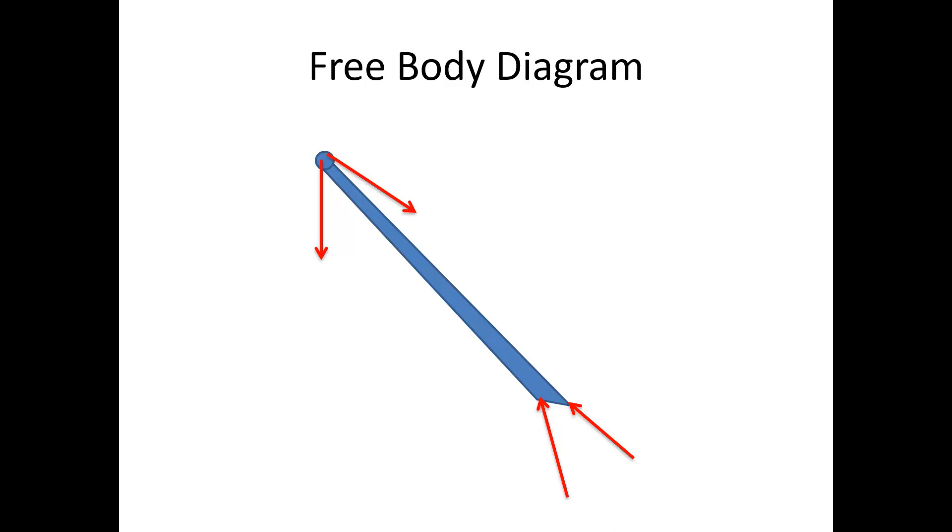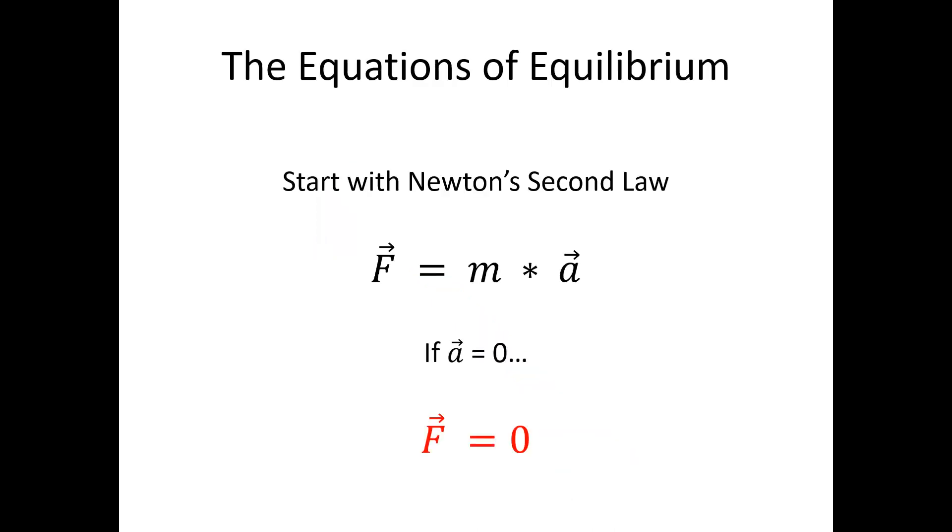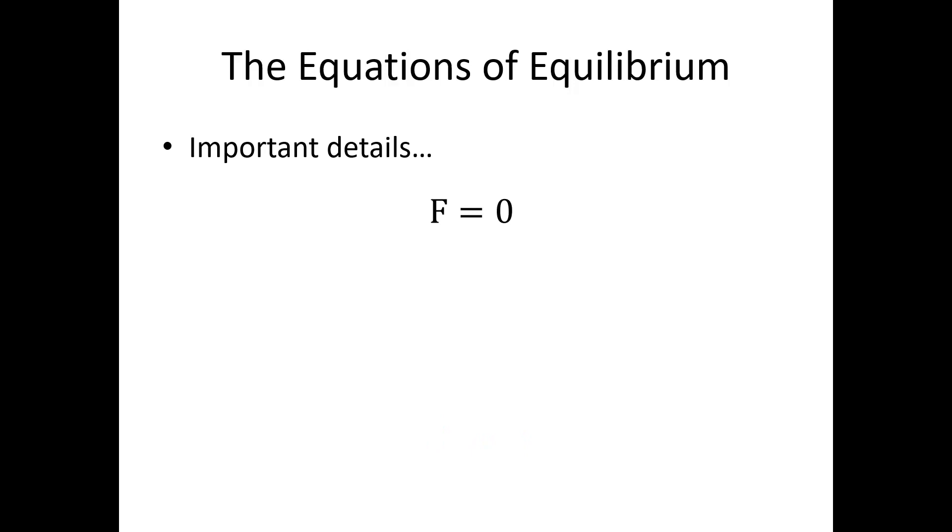Generally, if a body is in equilibrium, we start with Newton's second law, F equals ma. We establish that our acceleration was equal to zero, which means that our forces need to be equal to zero. Some important details with this: it is the forces are equal to zero, really the sum of all the forces. The net force on the object is zero. We need to add all of those forces together and they need to add up to zero. And we also need to note that these forces are vectors. So it's the sum of the force vectors that needs to be equal to zero.